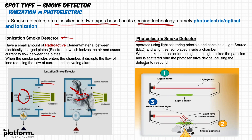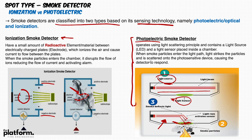The photoelectric type is now used in most manufactured devices. It operates using the light scattering principle and contains a light source LED and a light sensor placed inside the chamber. When smoke particles enter the light path, the light strikes the particles and scatters onto the photosensitive device, causing the detector to respond. When designing or reviewing a fire alarm system, always consider the photoelectric smoke detector type.